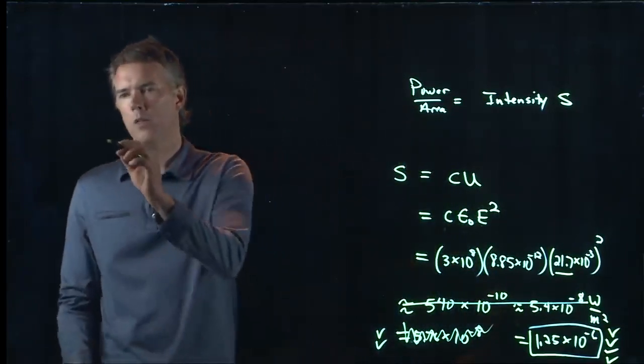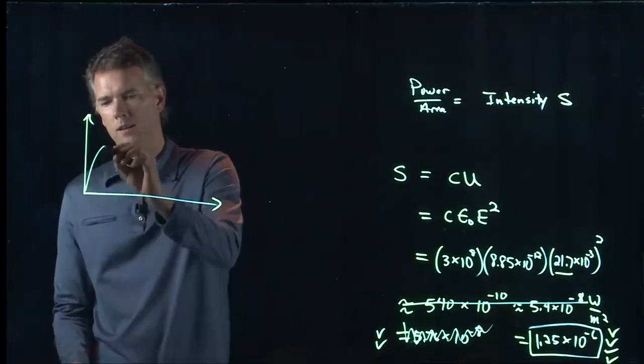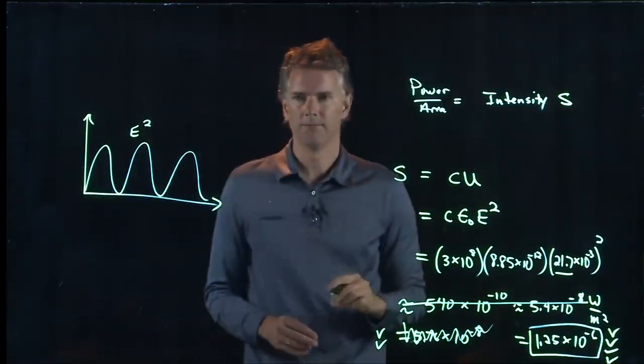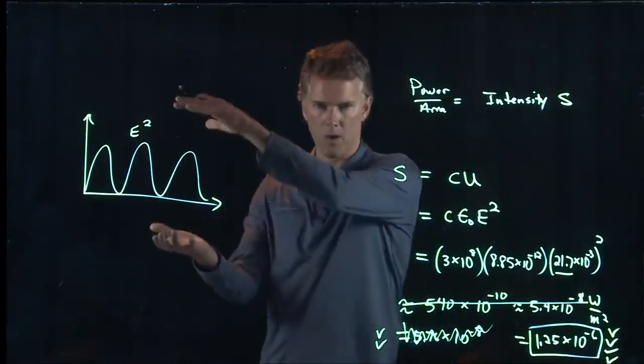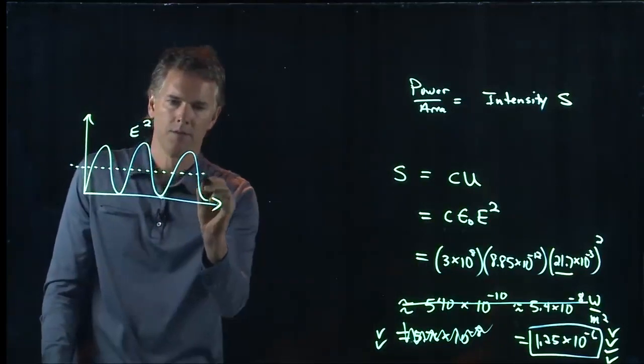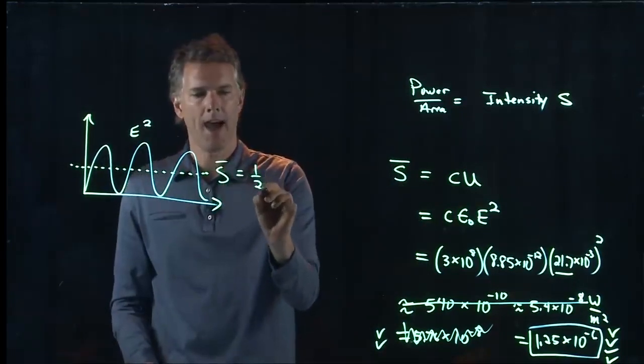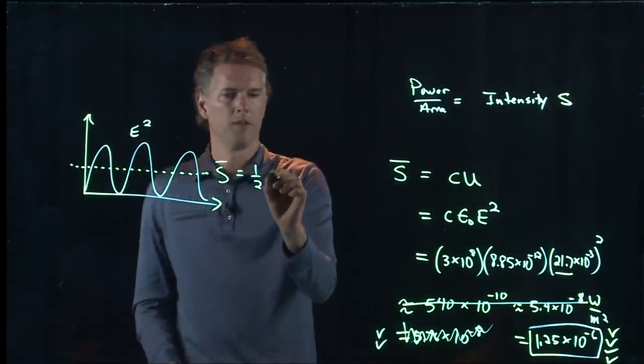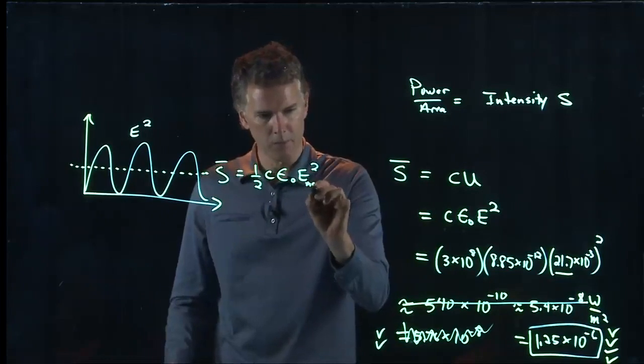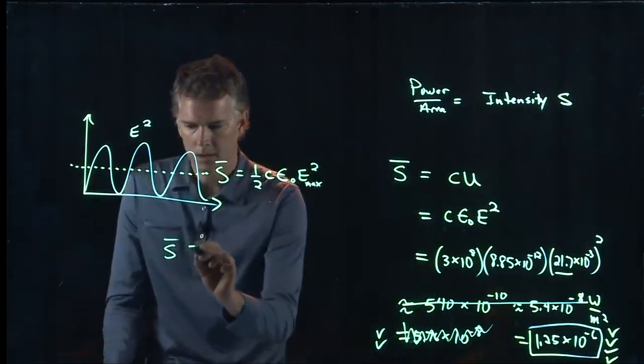But we have to be a little bit careful because when we think about E squared, what's it going to look like? It's in fact going to look like that, right? It's a positive number going up this high. So when we are calculating the average S bar, we need to calculate one half of the maximum. So it's going to be one half c epsilon naught E squared if this was the maximum value, which is what we put in there.